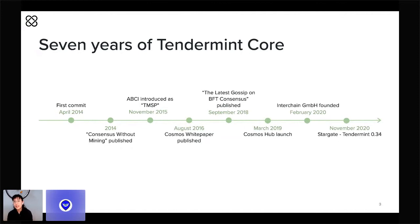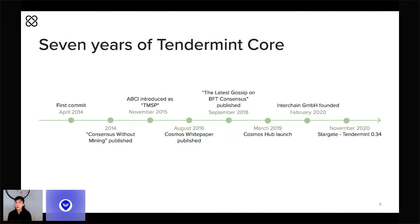This Tendermint white paper drew on research from academic computer science to present a completely new approach to Byzantine fault-tolerant consensus for public networks. The following year in 2015, the Tendermint Socket Protocol, or TMSP — now known as ABCI, the Application Blockchain Interface — was introduced. ABCI lets any deterministic state machine use Tendermint for replication, making Tendermint consensus dramatically more accessible for a wider range of applications.